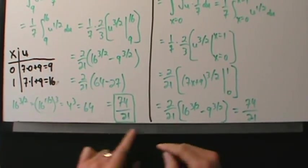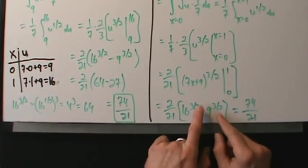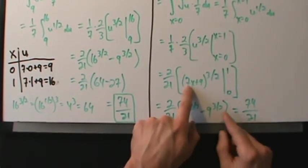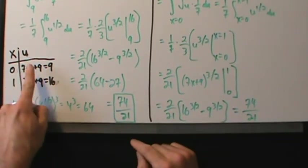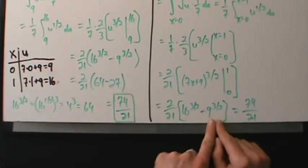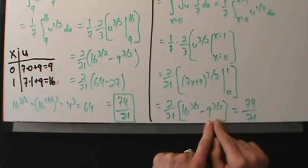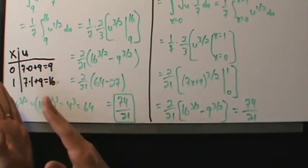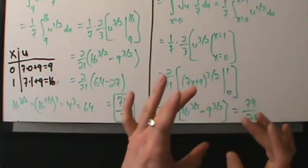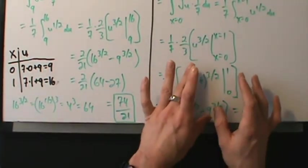The 9 in the chart came from 7(0) + 9 and the 16 came from 7(1) + 9 — same calculations either way. If you don't want to do the chart you can just do it this way, but it's still the exact same thing, just a little messier.